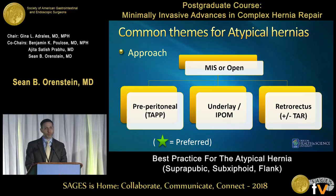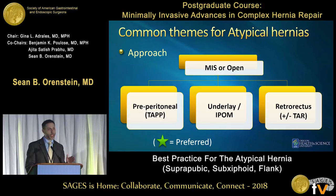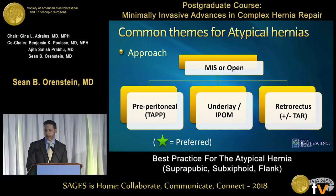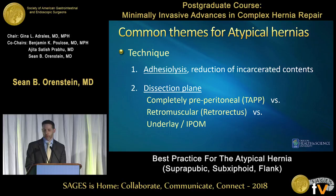There are multiple approaches. Even though this is a minimally invasive talk, I'll go back and forth between MIS and open — whether lap or robotic — because there's a lot of overlap in how we do these cases. Once you pick MIS or open, you want to pick your plane: pre-peritoneal approach, underlay, or retromuscular repair. For all these, the common themes are: start with adhesiolysis, reduce the contents, and then choose what plane you're going to use.